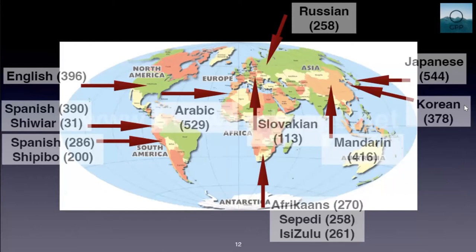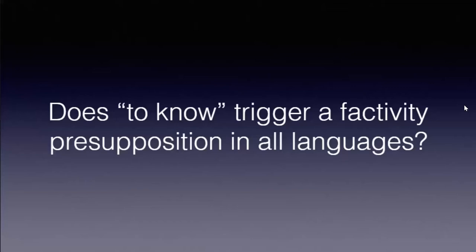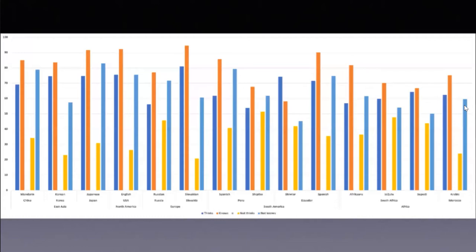Participants were drawn from the usual sites — we're still waiting for the Indian data. The way we answer the question is by looking for an interaction between 'think' and 'know.' People should choose the red box more often for 'knows' than for 'thinks' in the affirmative. But critically, when negated, 'John doesn't think' should drop considerably in red-box choices, while 'John doesn't know' should remain very high if there's a factivity presupposition. That's exactly what you find in English, where formal semanticists work mostly.